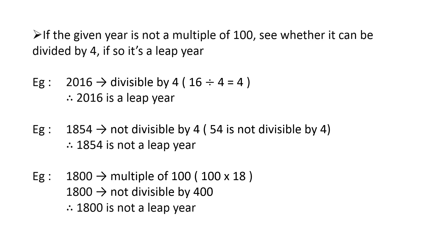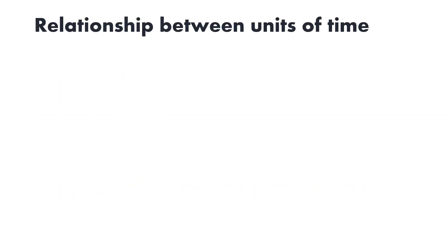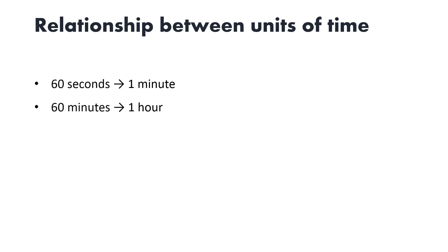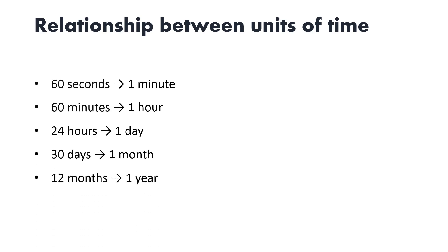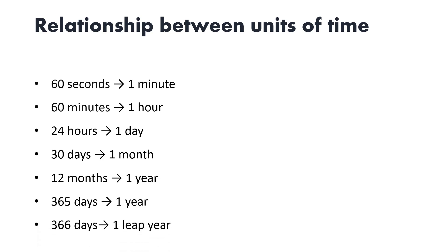Now we are going to see the relationship between units of time. 60 seconds equals one minute, 60 minutes equals one hour, 24 hours gives you a day, and 30 days gives you a month.